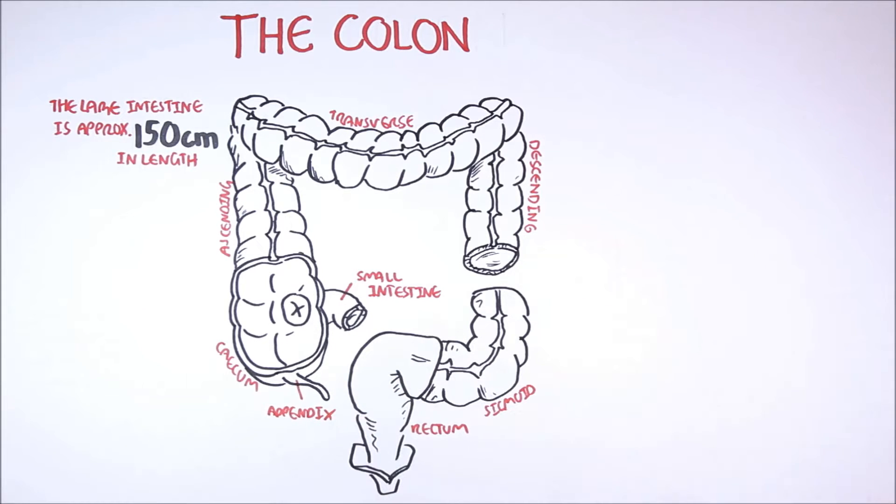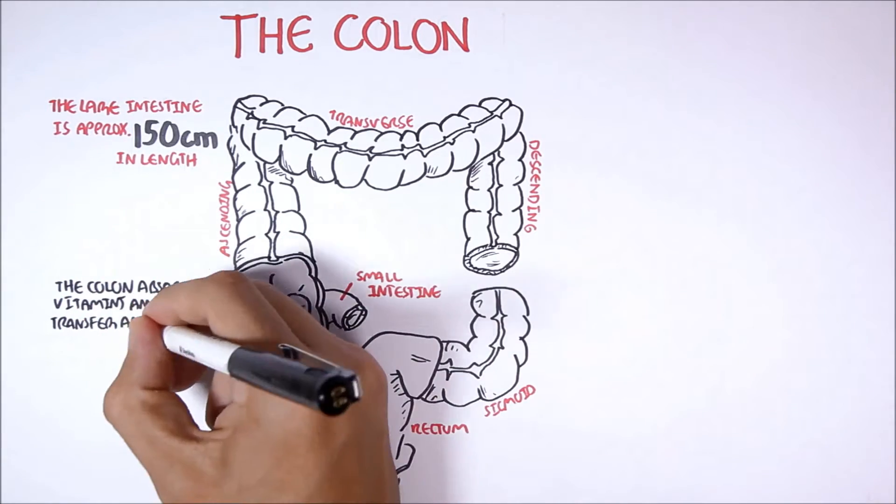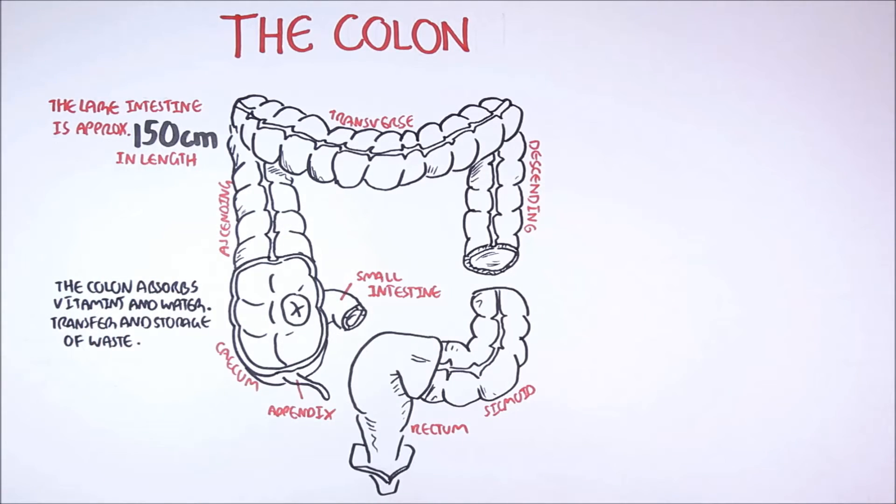The appendix here is a pouch structure that connects to the cecum, and is thought to have a role in the immune system. The colon's major role is to absorb vitamins, water, and ions, as well as the transfer and storage of waste.